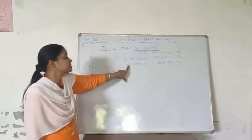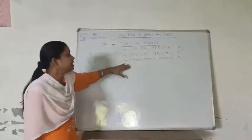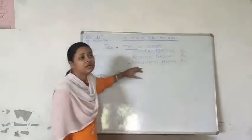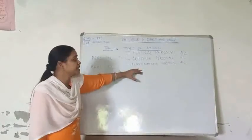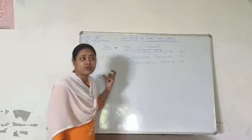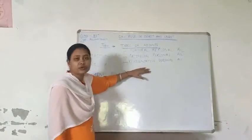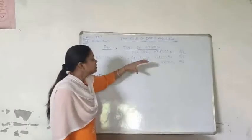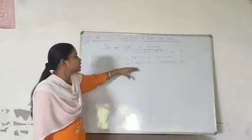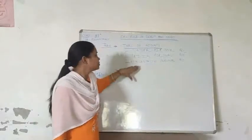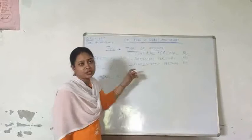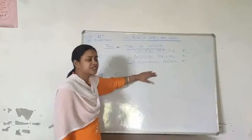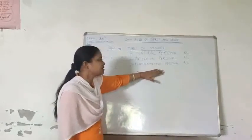Third is representative personal account. Representative personal account is the account which shows the group of persons, like outstanding expenses, prepaid expenses, accrued income, and earned income. These four types of terms are included in representative personal account.